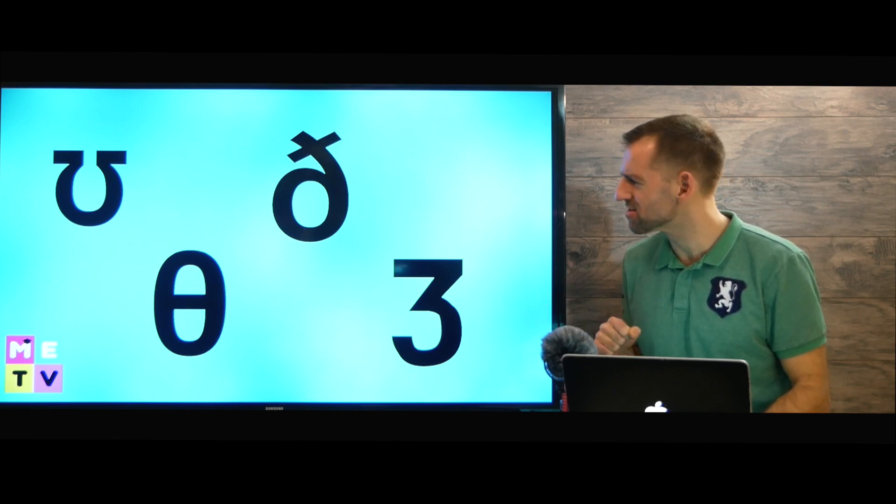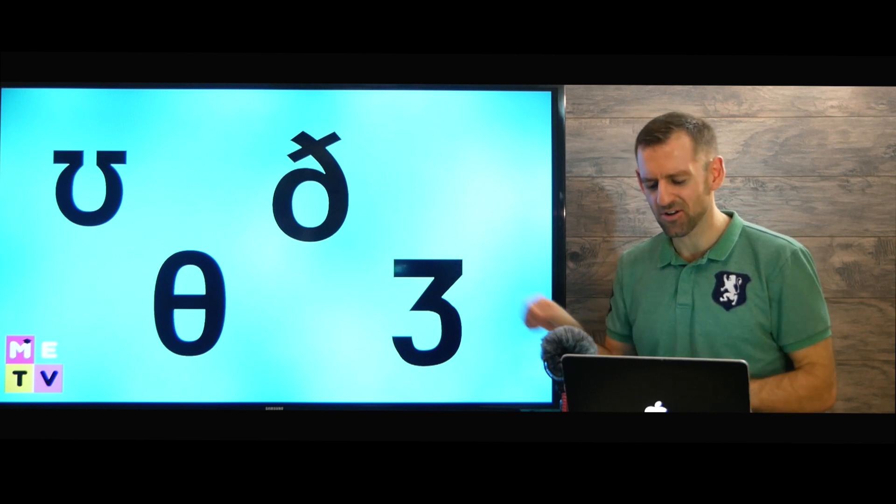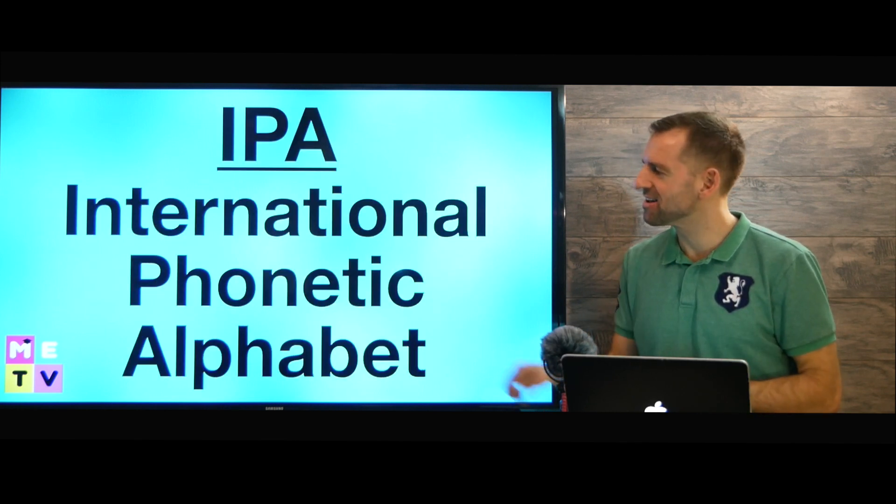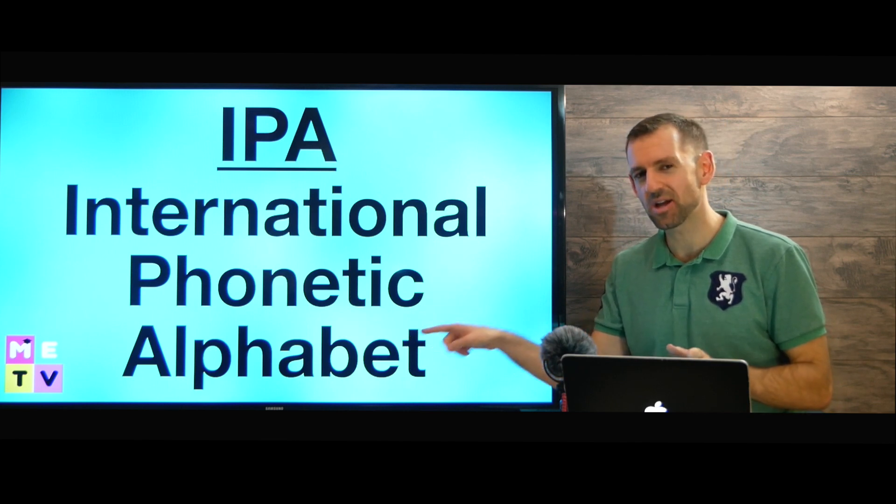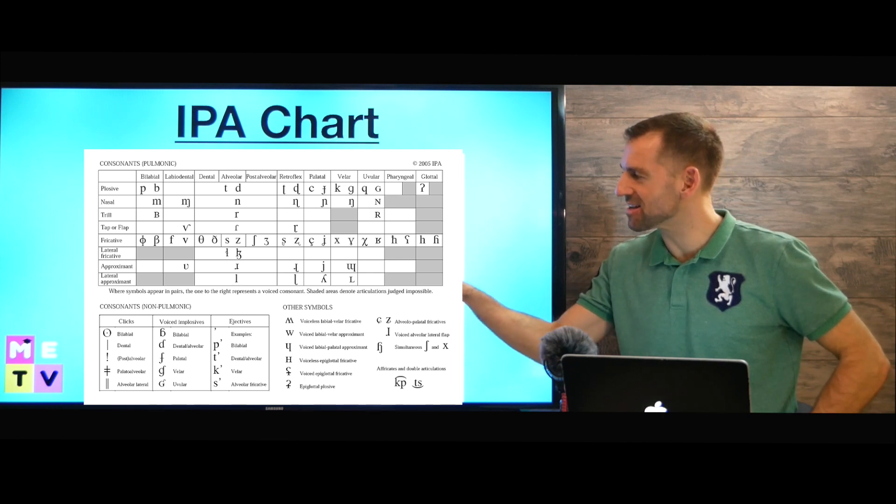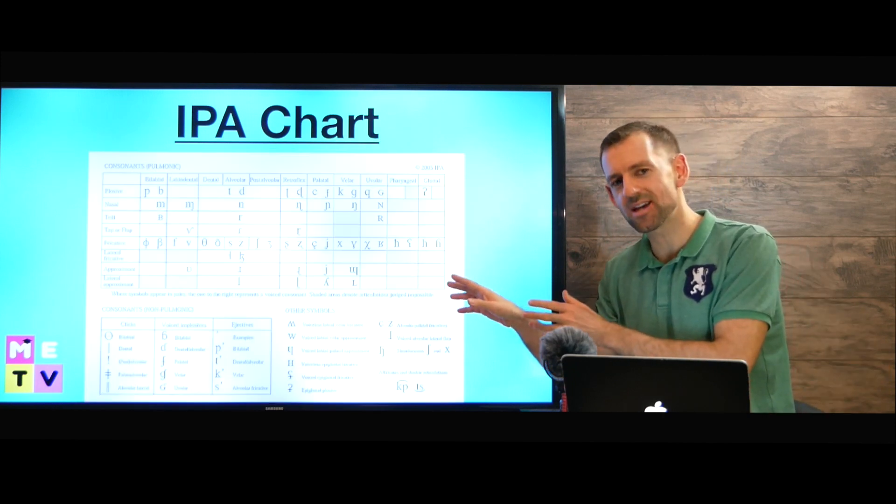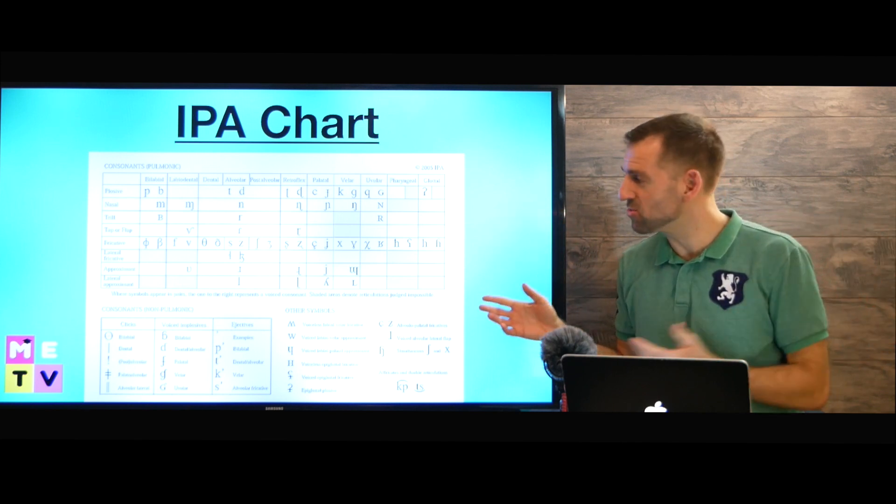What are these symbols? Do you know what they are? They're called IPA, International Phonetic Alphabet. If you Google IPA chart, you're going to see something like this. This is all the sounds in every language around the world. Can you believe it?